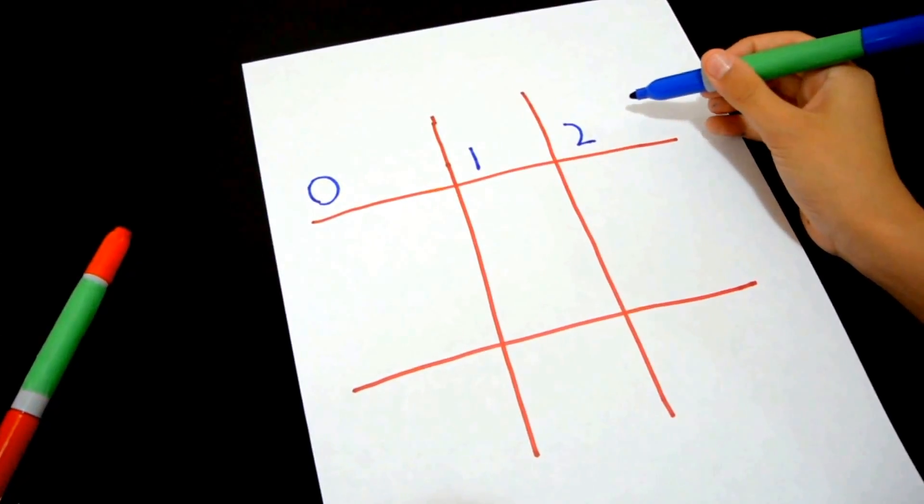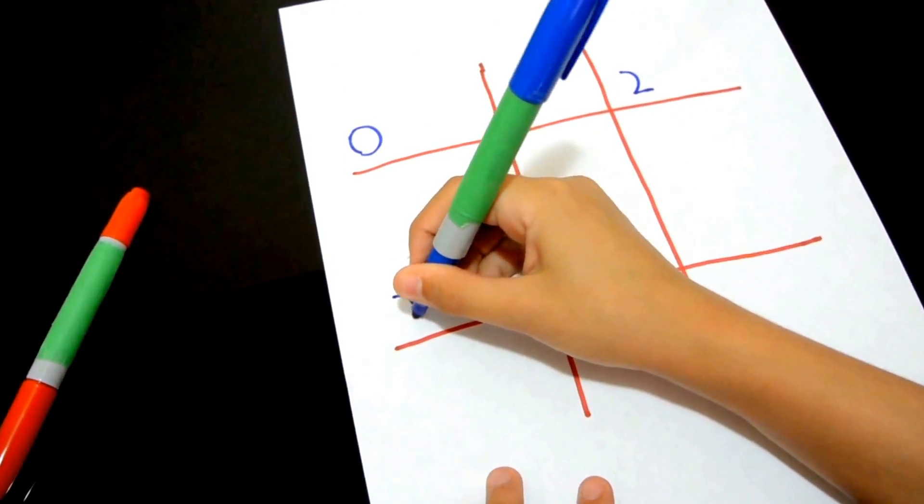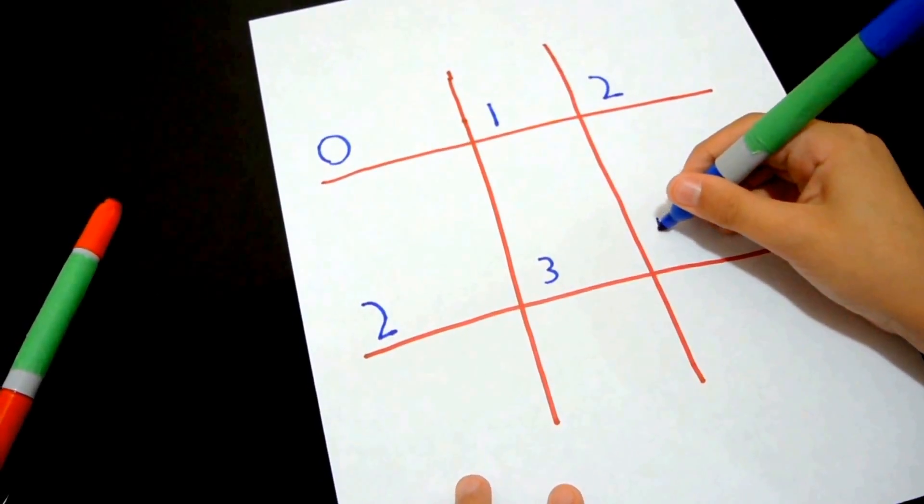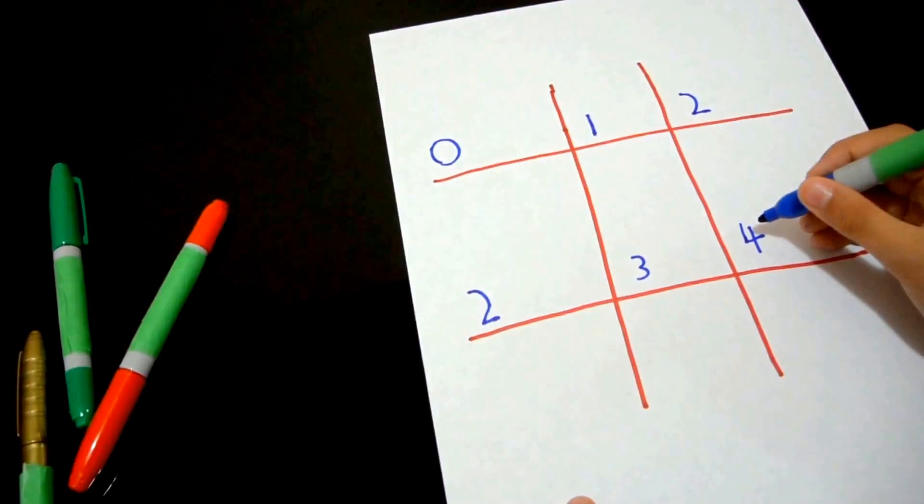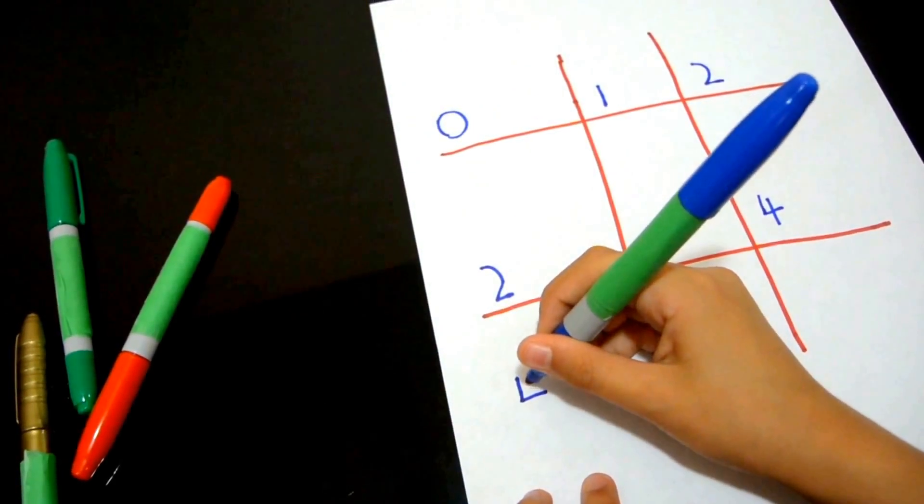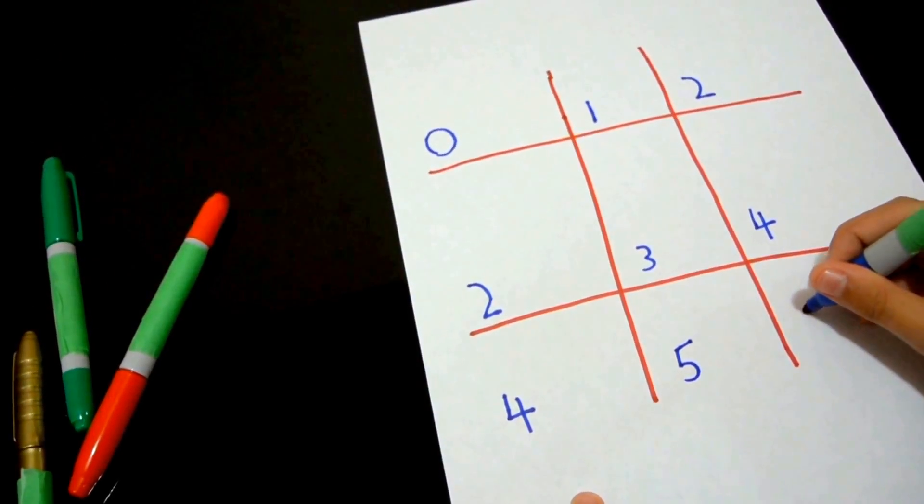And repeat the number here. So put 2, 3, 4. And repeat this one again over here. 4, 5, 6.